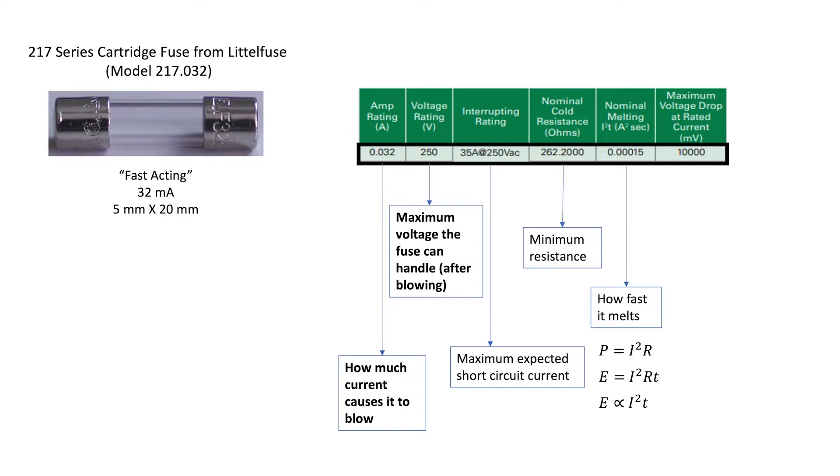A fuse with a larger I squared T number will take a longer time to melt. That's all it says. This is a fast blow fuse, and this is a pretty small number here.